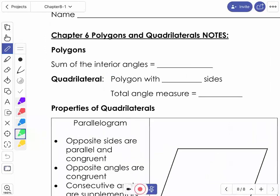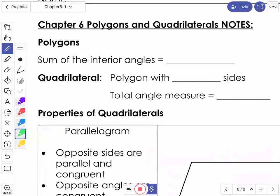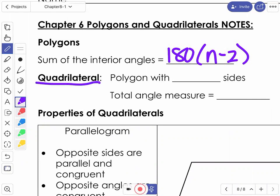Just to remind you guys from polygons, we talked about the sum of the interior angles of any polygon was 180 times n minus 2. And remember, the n stands for number of sides. We spent a lot of time working with quadrilaterals, and specifically a quadrilateral is a polygon with four sides.